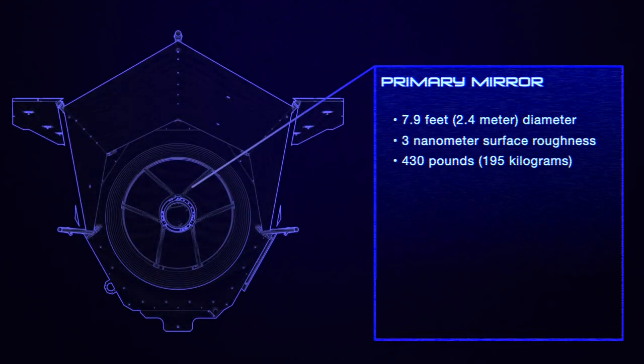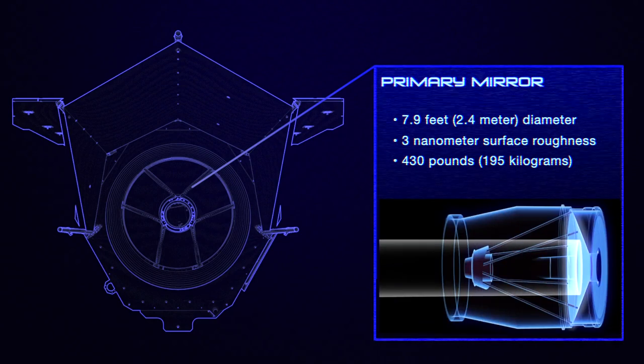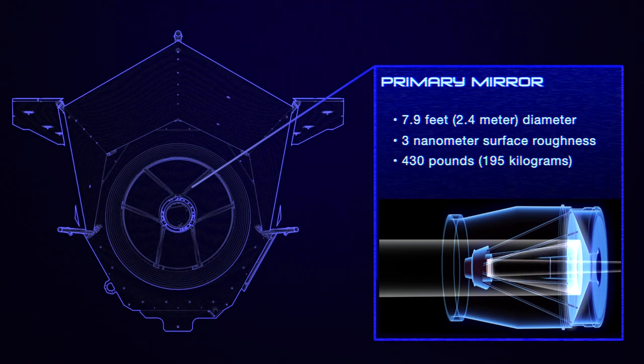This is where Roman is closest to Hubble. It has the same size and type of main mirror, a 2.4-meter precisely shaped piece of silver-coated glass. The size of this mirror is partly how Roman matches Hubble's resolution.